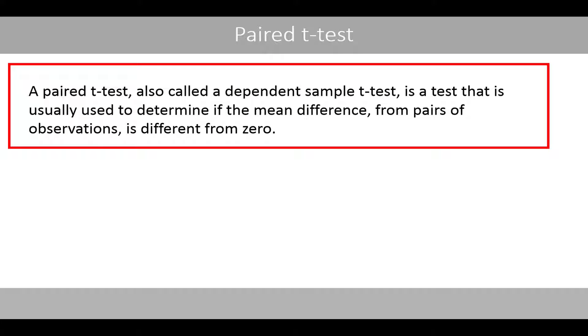A paired t-test, also called the dependent sample t-test, is a test that is usually used to determine if the mean difference from pairs of observations is different from zero.